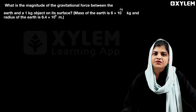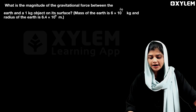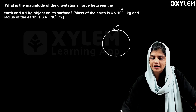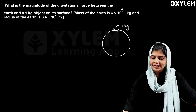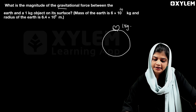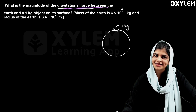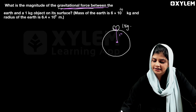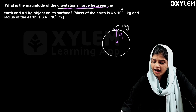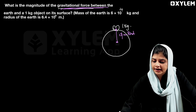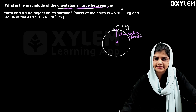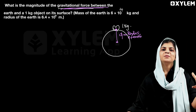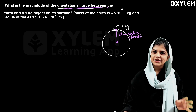The next question: What is the magnitude of gravitational force between the Earth and a 1 kilogram object on Earth's surface? On Earth's surface, we have a 1 kilogram object. When the object is on the surface, the distance between the object and Earth is equal to the radius of Earth.